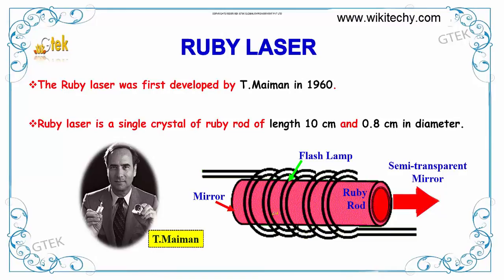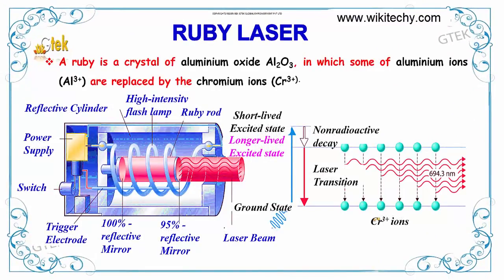It is surrounded by a flash lamp and this is a mirror. You can see the switch here, the power supply, your trigger electrode, and you got your high intensity flash lamps, your ruby rod, and this one is your reflective cylinder. This is your mirror of 100% reflective mirror and it is 95% reflective mirror. So this one is your ground stage or your laser beam. This will have your short lived excited state and long lived excited stage, and your laser light is here.